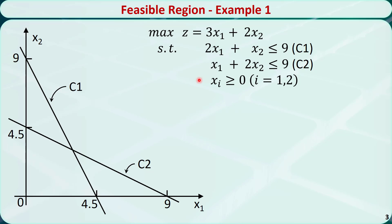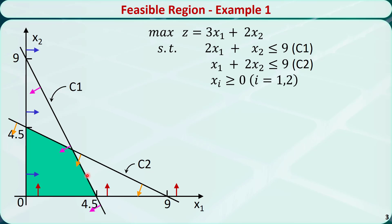This is just one constraint. If we have more constraints, we need to find the intersection of all the feasible regions. In this example, it has two constraints and two sign restrictions. The feasible region of x1 ≥ 0 is from this line to the right; x2 ≥ 0 is above this line; the first constraint c1 is below this line; and the second constraint c2 is below this line. The feasible region of the problem is the intersection of all four feasible regions, which is the shaded area.